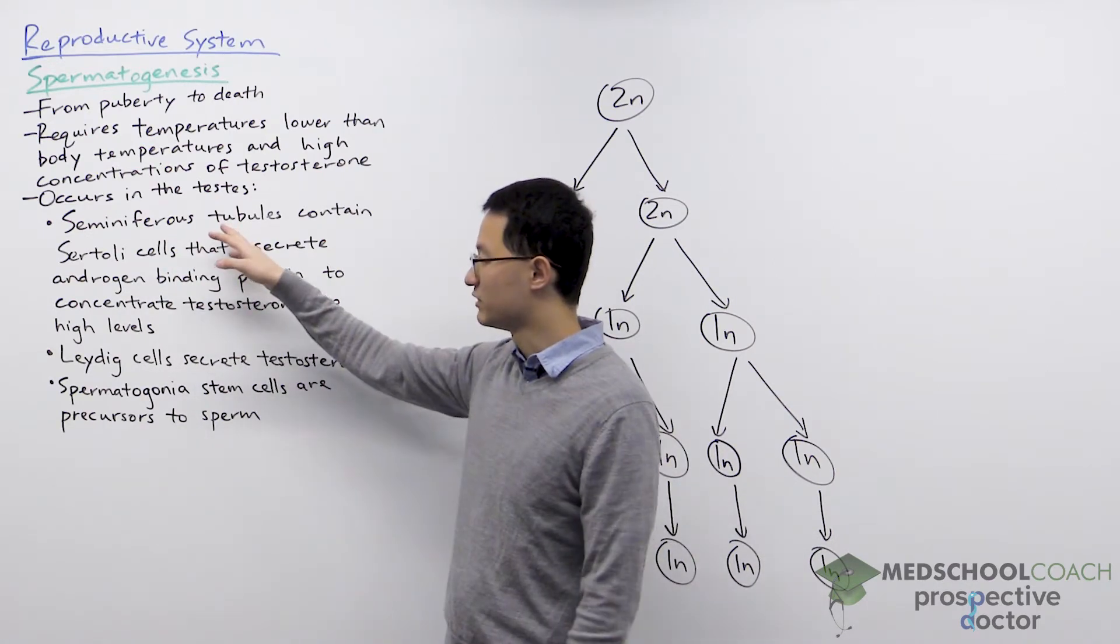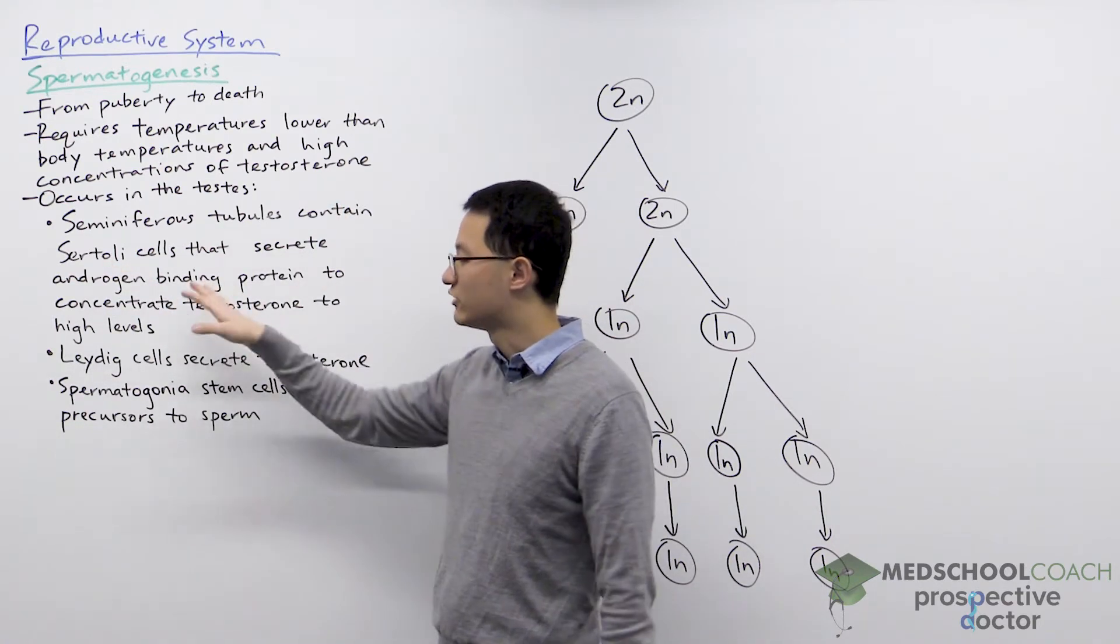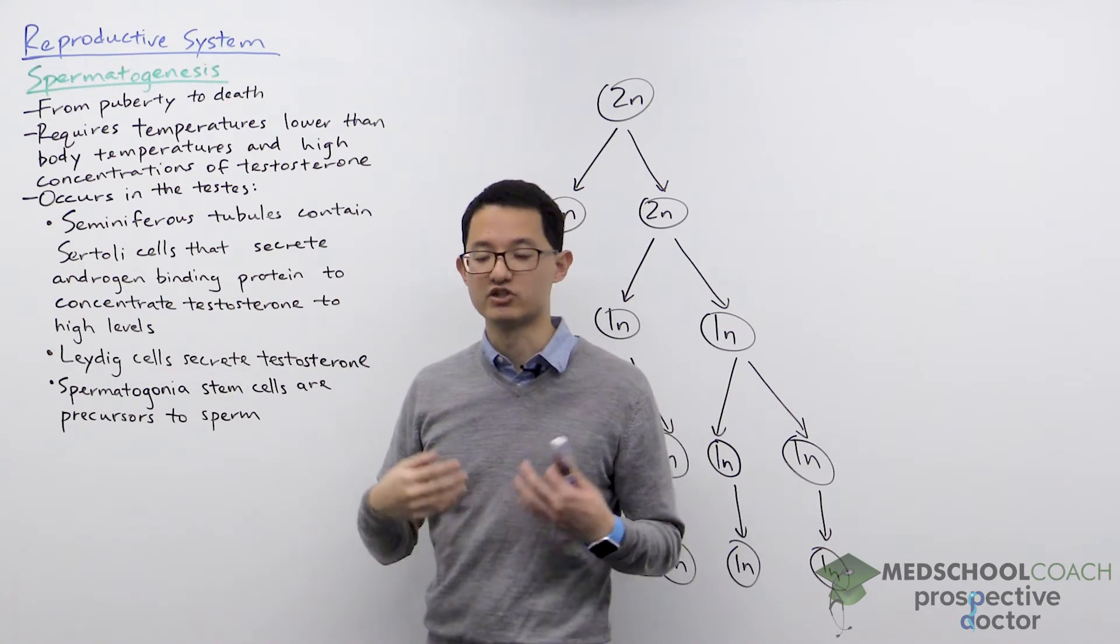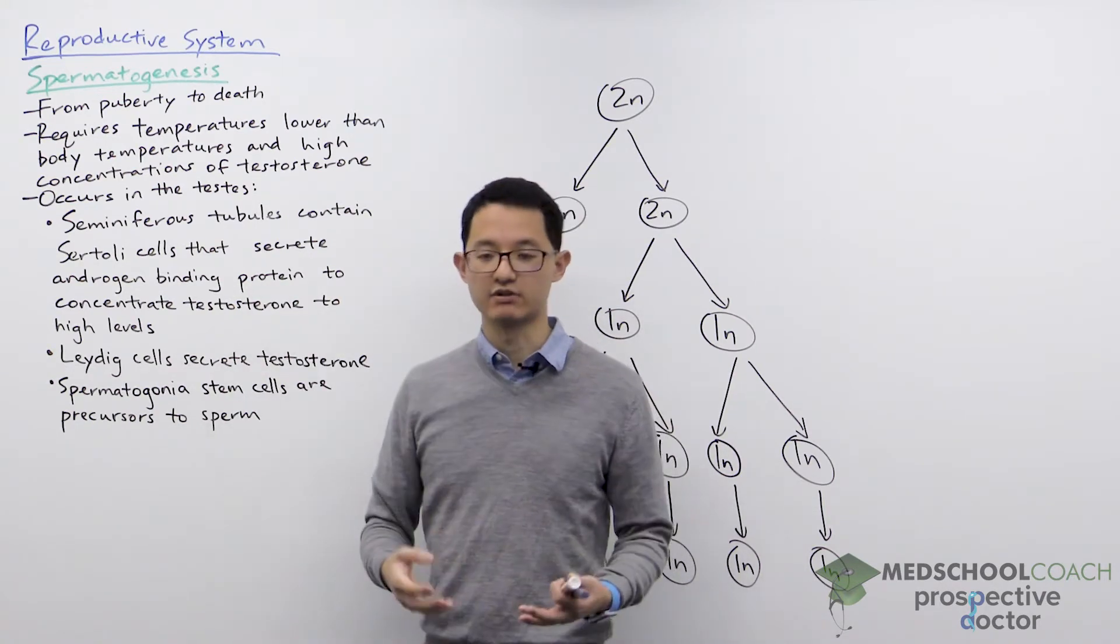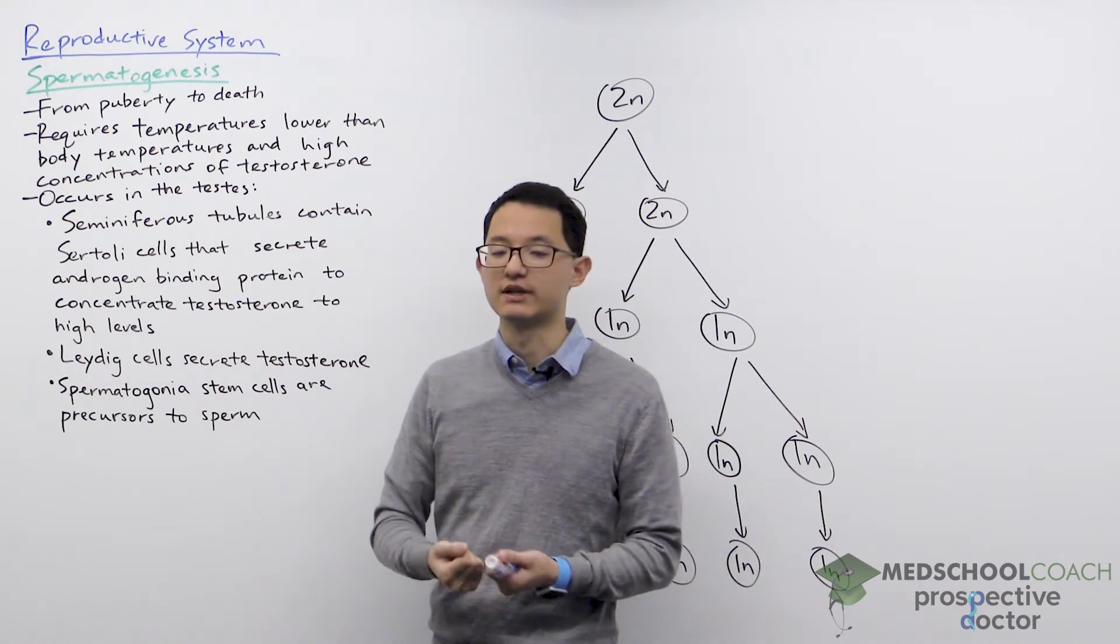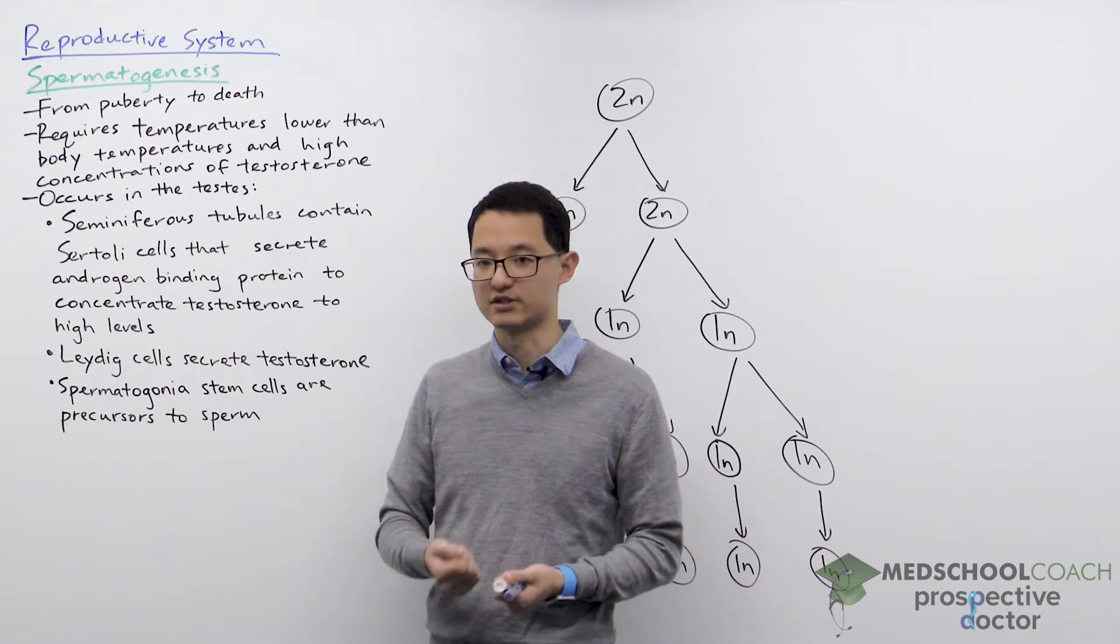The seminiferous tubules' walls are made of Sertoli cells. Sertoli cells secrete androgen binding protein which binds testosterone. This androgen binding protein essentially has the function of concentrating the testosterone to high levels necessary for spermatogenesis.